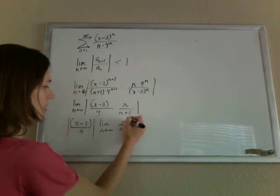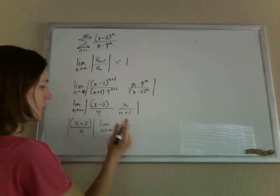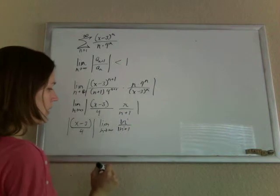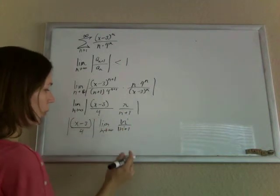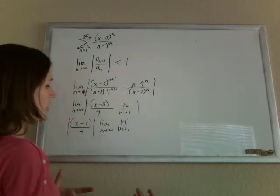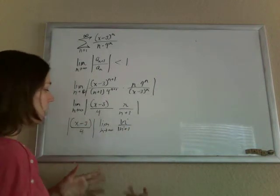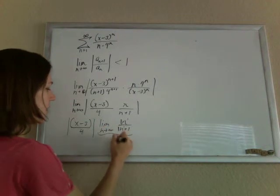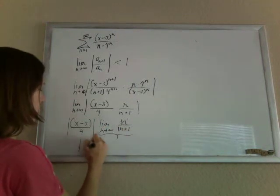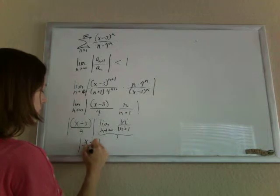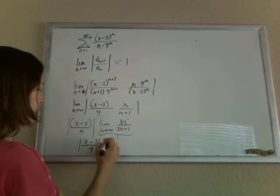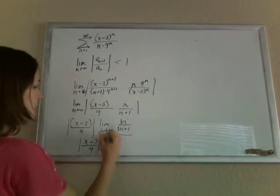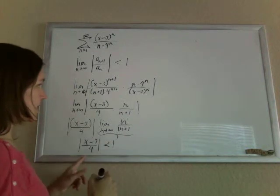You can tell because the degree of the top and the degree of the bottom match, so you take the coefficients, 1 over 1. You could do it by dividing everything by the highest power of n. You could do L'Hopital's rule. However you see that, this whole thing is going to go to 1, leaving you with the absolute value of x minus 3 over 4. And that needs to be less than 1 for this thing to converge.